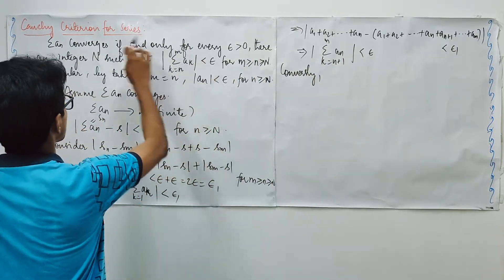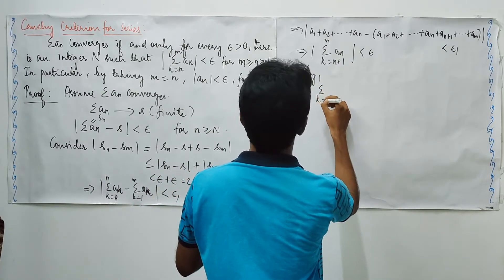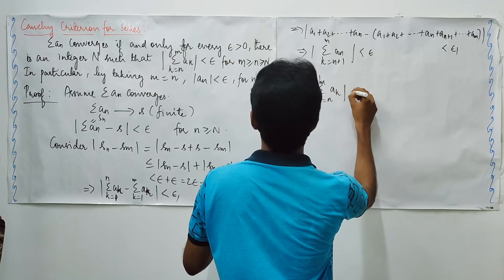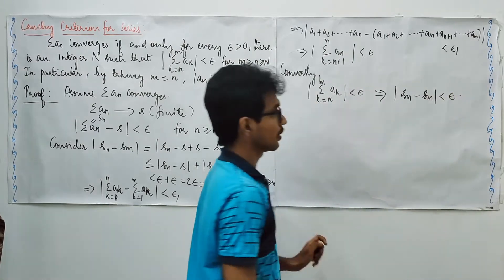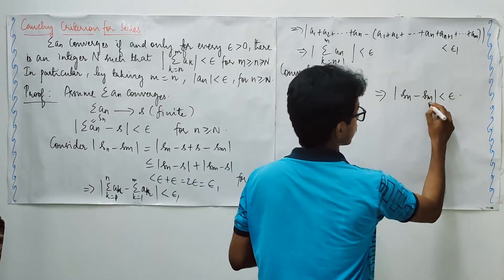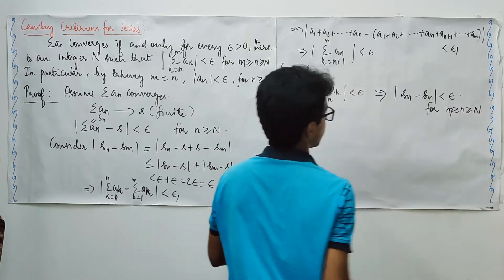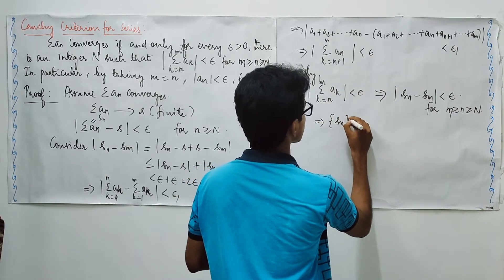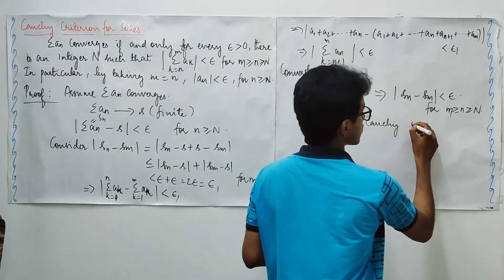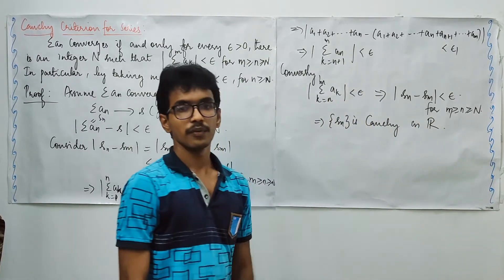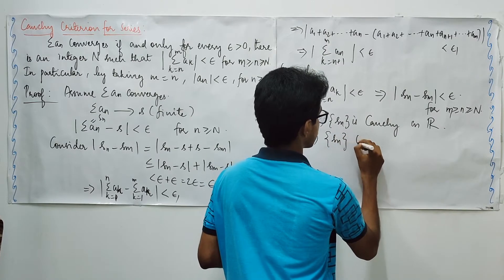Conversely, we are assuming this one and we have to prove it converged. That is summation k runs from n to m, a_k is less than epsilon. It means absolute of s_m minus s_n less than epsilon. This implies the sequence s_n is Cauchy, Cauchy sequence in R.